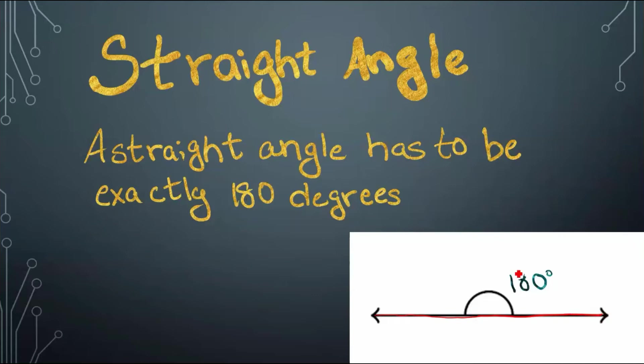Straight Angle. A straight angle has two rays that are laid down straight. It is exactly 180 degrees and makes a semicircle when drawn.